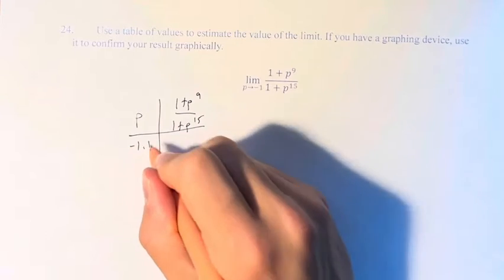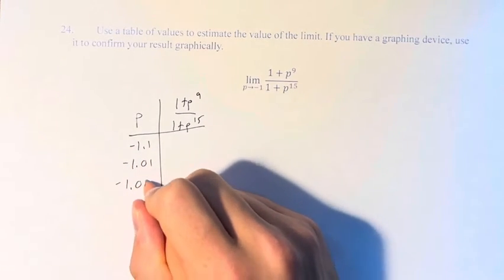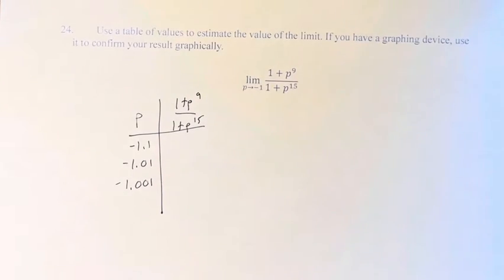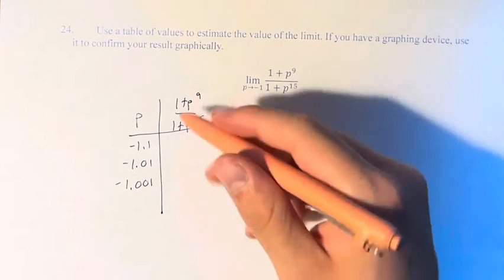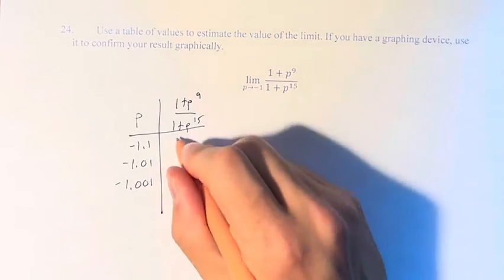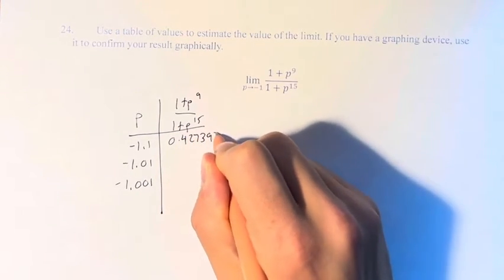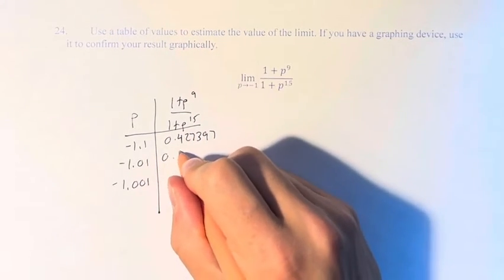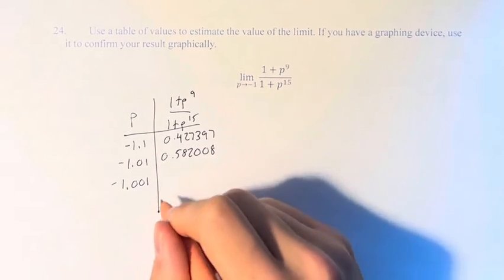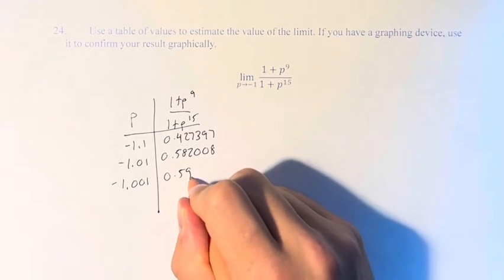We have negative 1.1, negative 1.01, and negative 1.001 — and as you can see, these are getting closer and closer to negative 1. The corresponding values, if you plug them into your calculator, are 0.427397, 0.582008, and 0.5982.